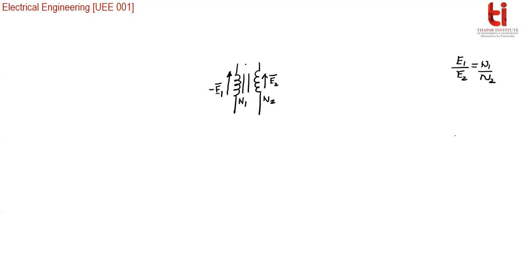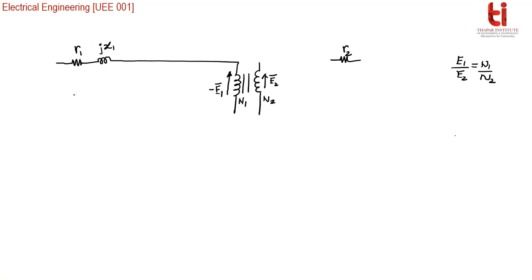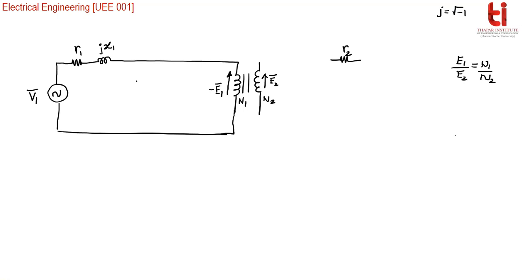This ideal transformer means the non-idealities we include in terms of circuit elements. On the left-hand side of the primary winding, that is shown here as small r1, and secondary winding resistance is shown as small r2. The primary side leakage reactance is shown, and we know that this reactance should come with J, where J is root of minus 1. The supplied voltage is shown as capital V1 bar.